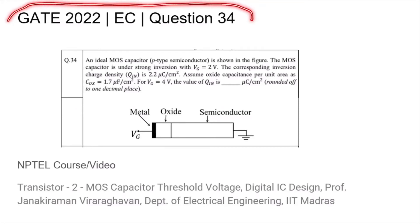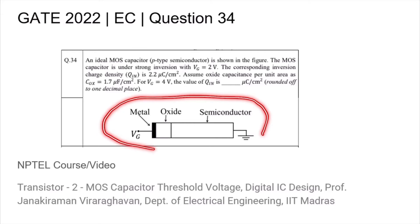This is question 34 from the GATE 2022 EC paper. We are given a metal oxide semiconductor (MOS) capacitor with a P-type semiconductor, gate voltage VG, with the semiconductor grounded. We are asked to find out